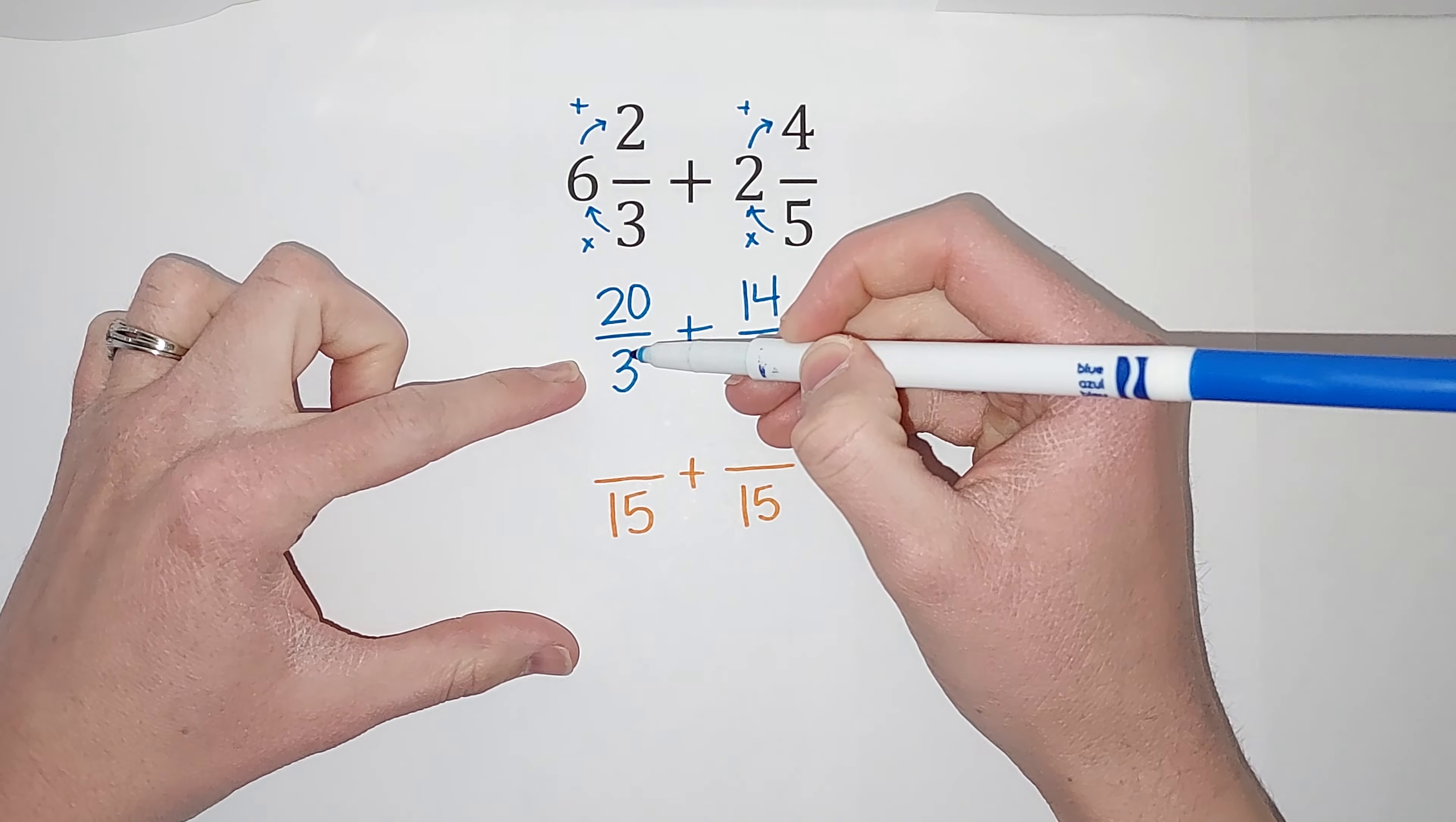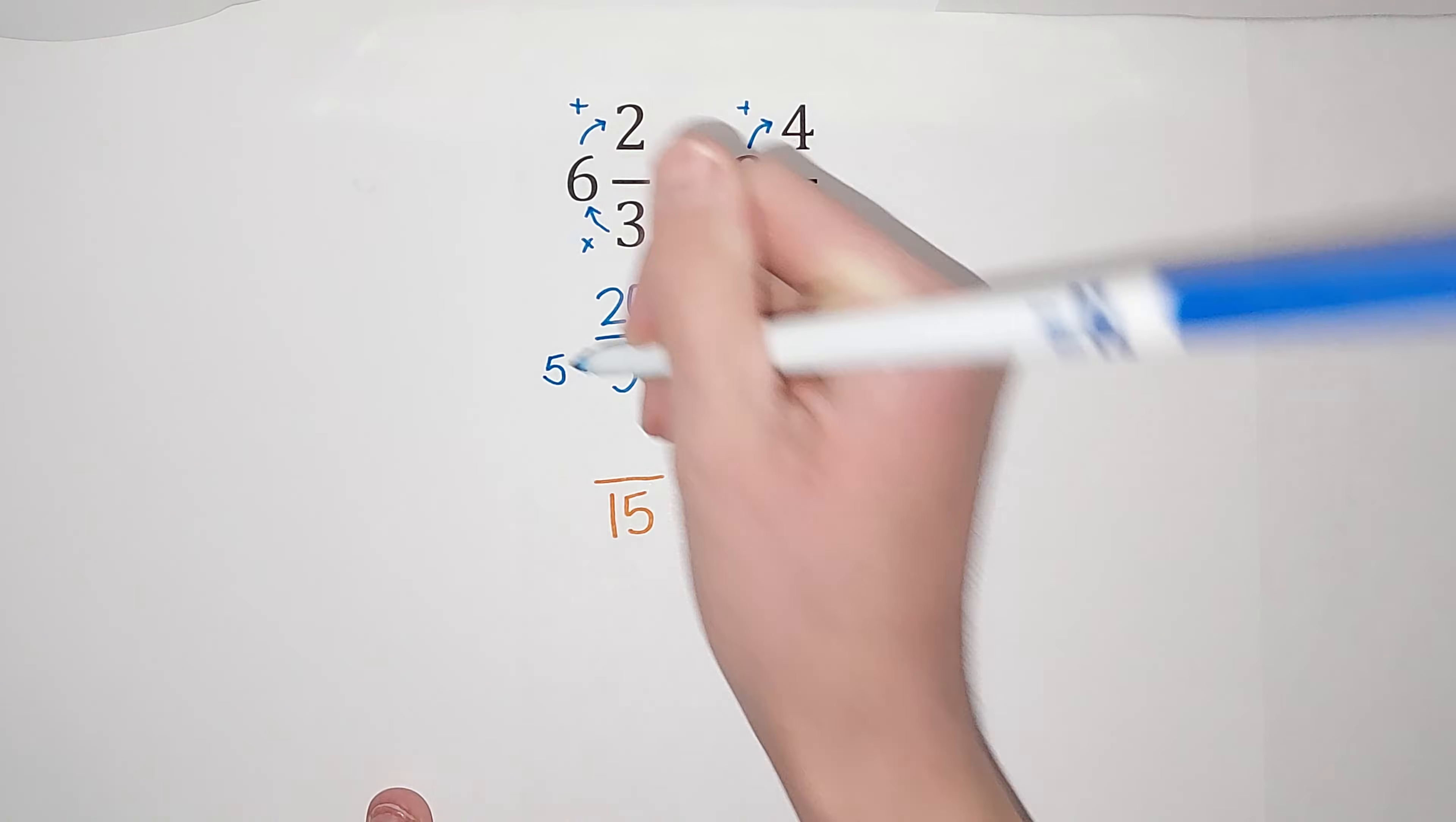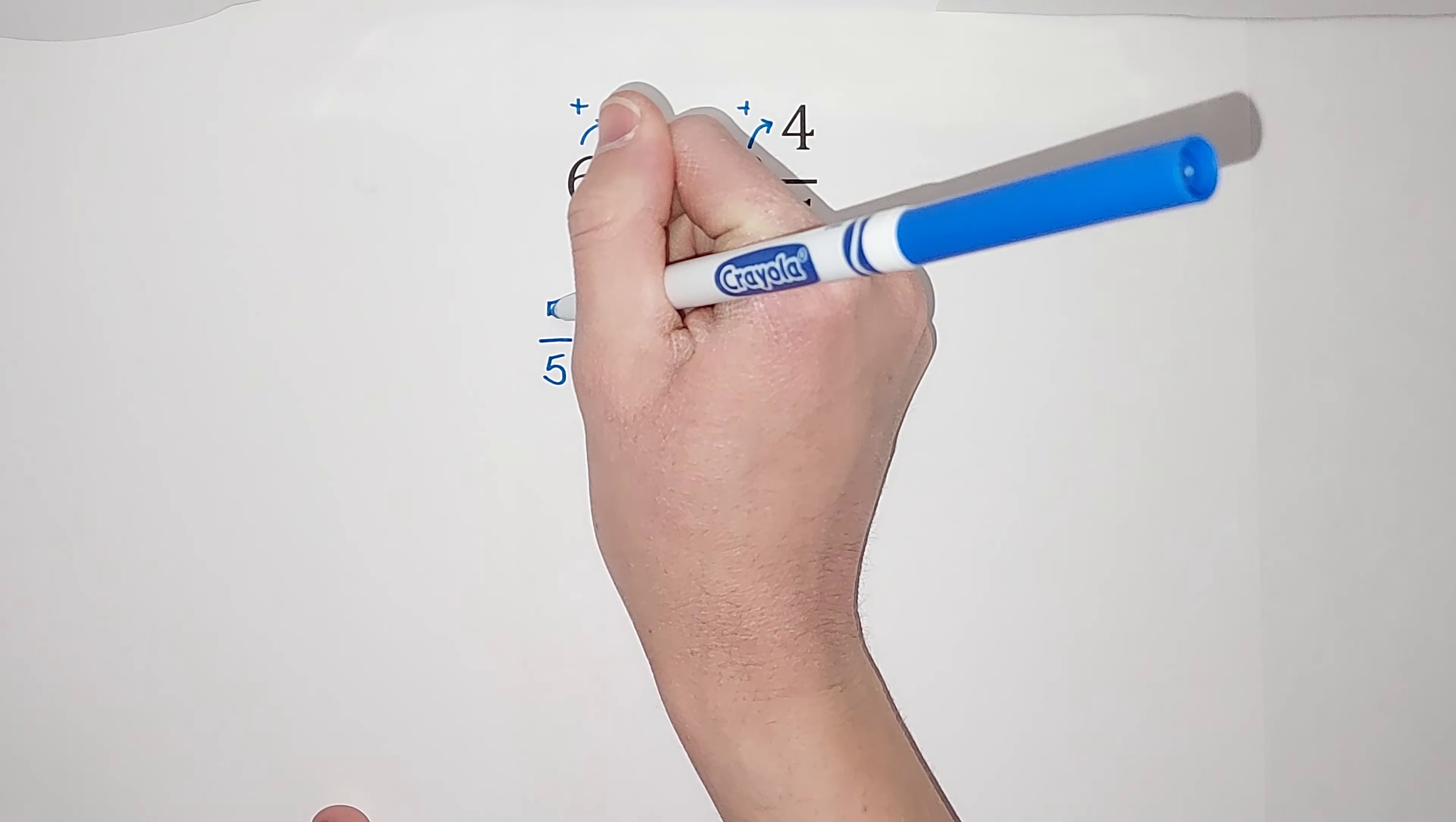So what do I multiply three by to get 15? Well, I multiply it by five, right? But I can't just go multiplying by five wherever I want. If I multiply by five on bottom, I need to multiply by five on top.